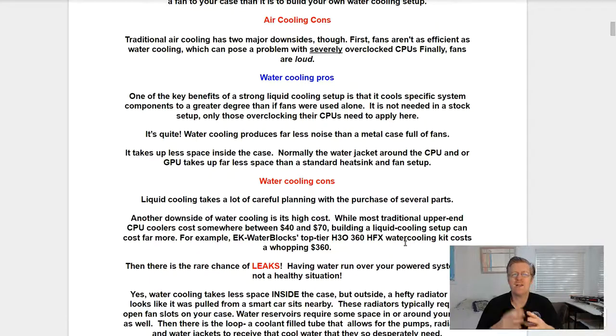Air cooling cons. Traditional air cooling has two major downsides though. First, fans aren't as efficient as water cooling, which can pose a problem with severely overclocked CPUs. Finally, fans are quite loud.